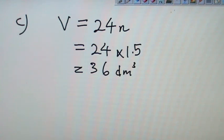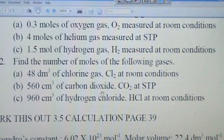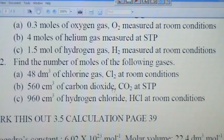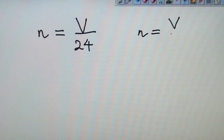Now let's turn to question number 2. Let's look back at the question. Question number 2. Find the number of moles of the chlorine gases. 48 dm³ of chlorine gas. 560 cm³ of carbon dioxide gas. 960 cm³ of hydrogen chloride gas. So remembering this page and you can refer to your textbook. Maybe I can put some information for you. So they want to find the number of moles. I mentioned before, actual volume over standard volume.